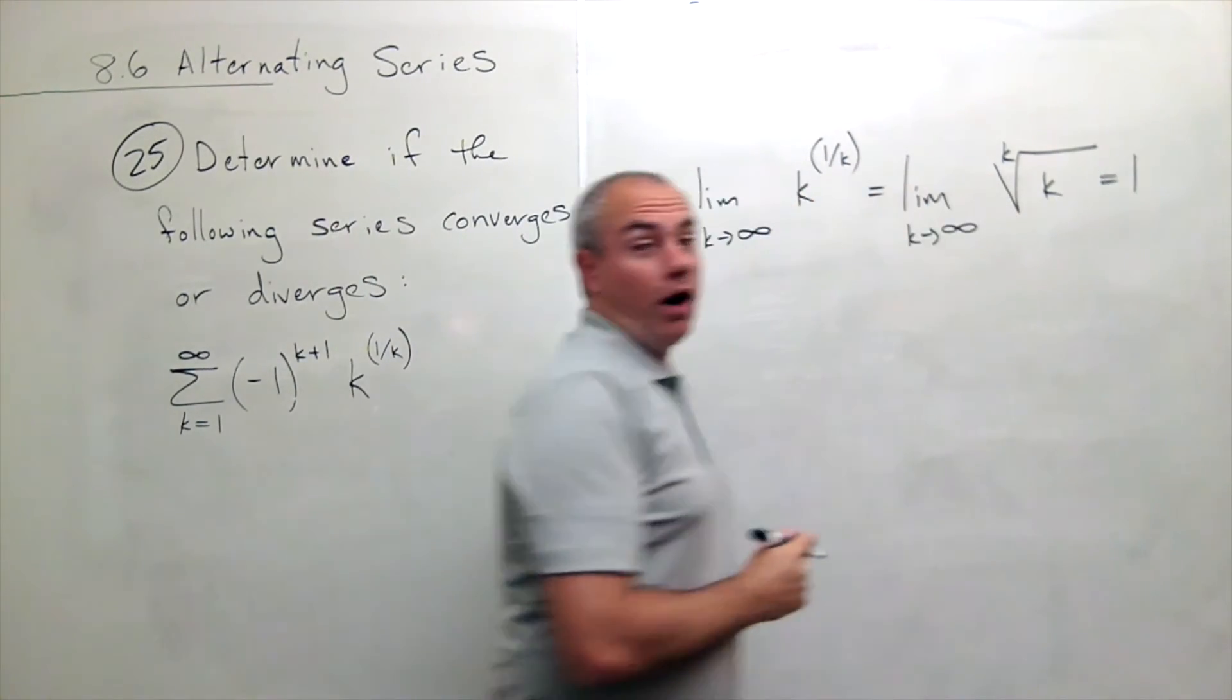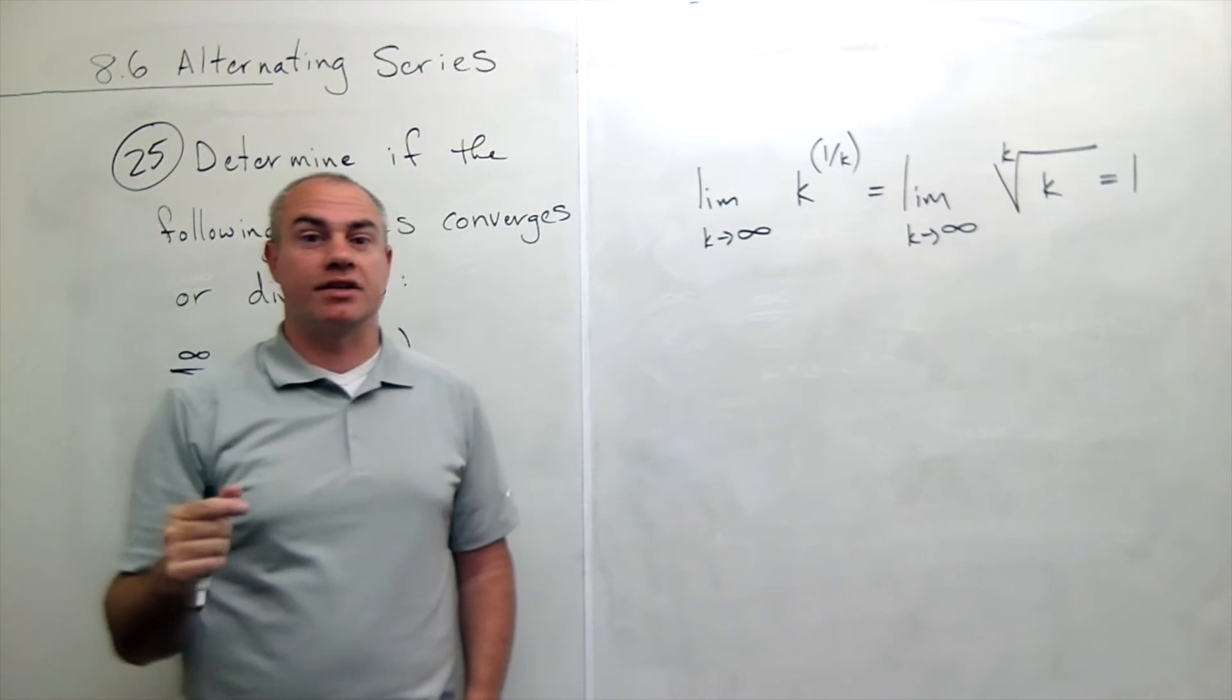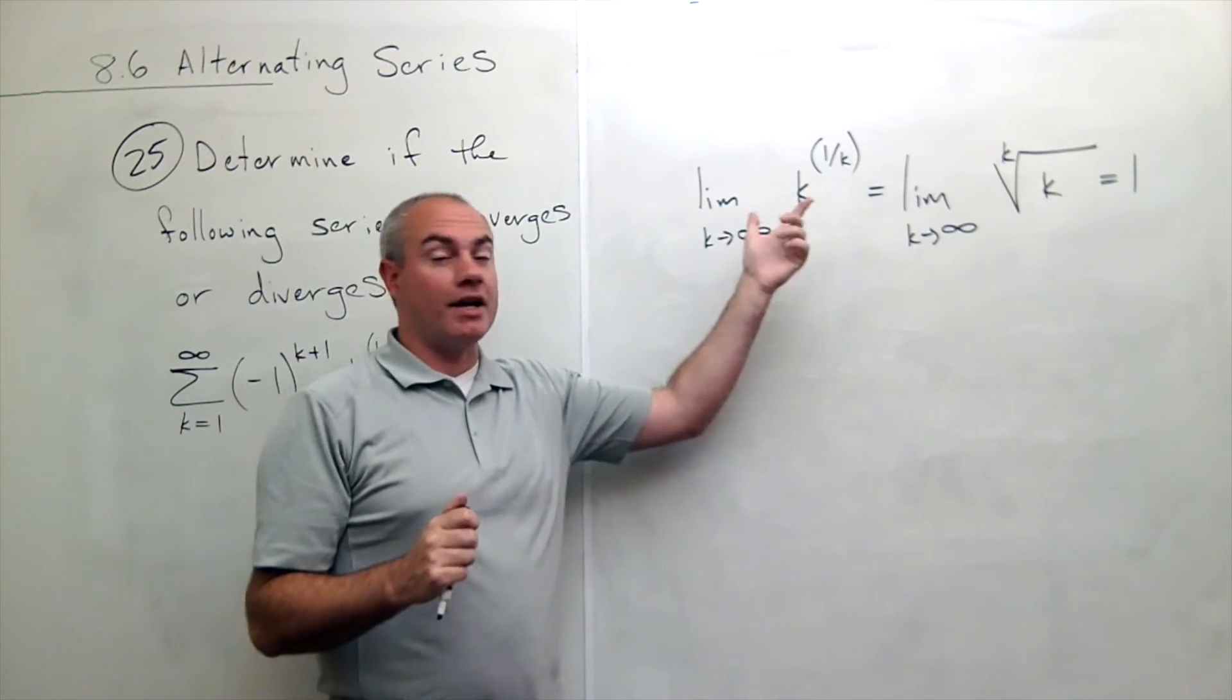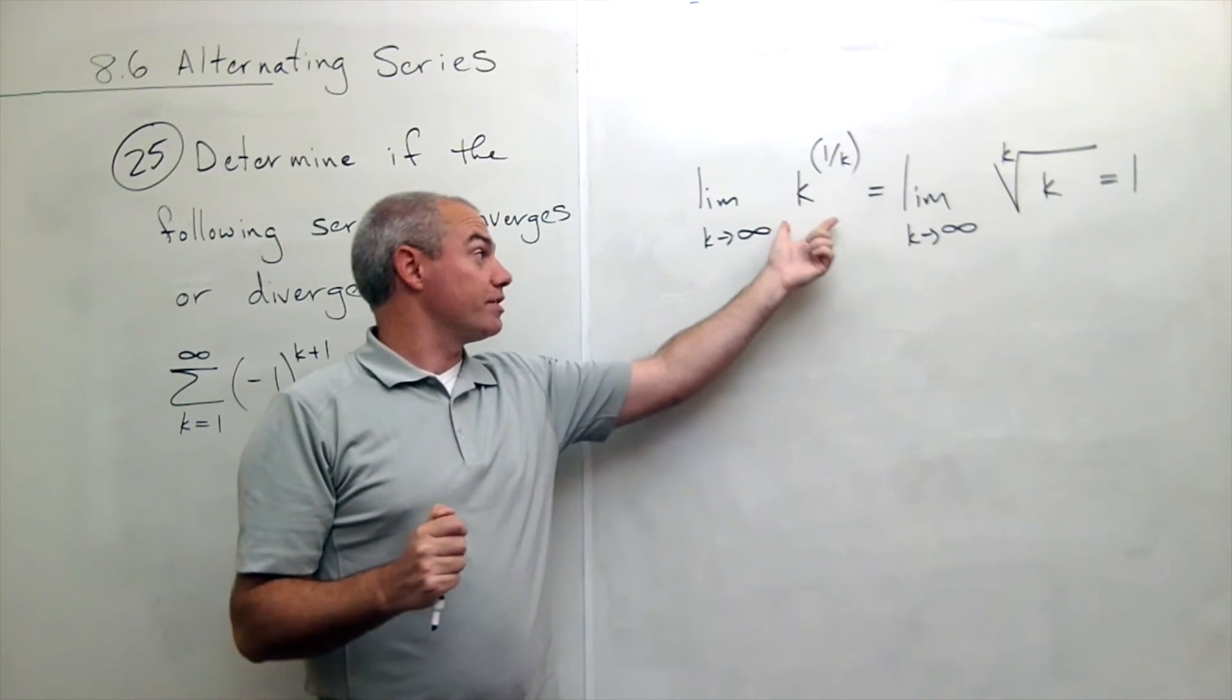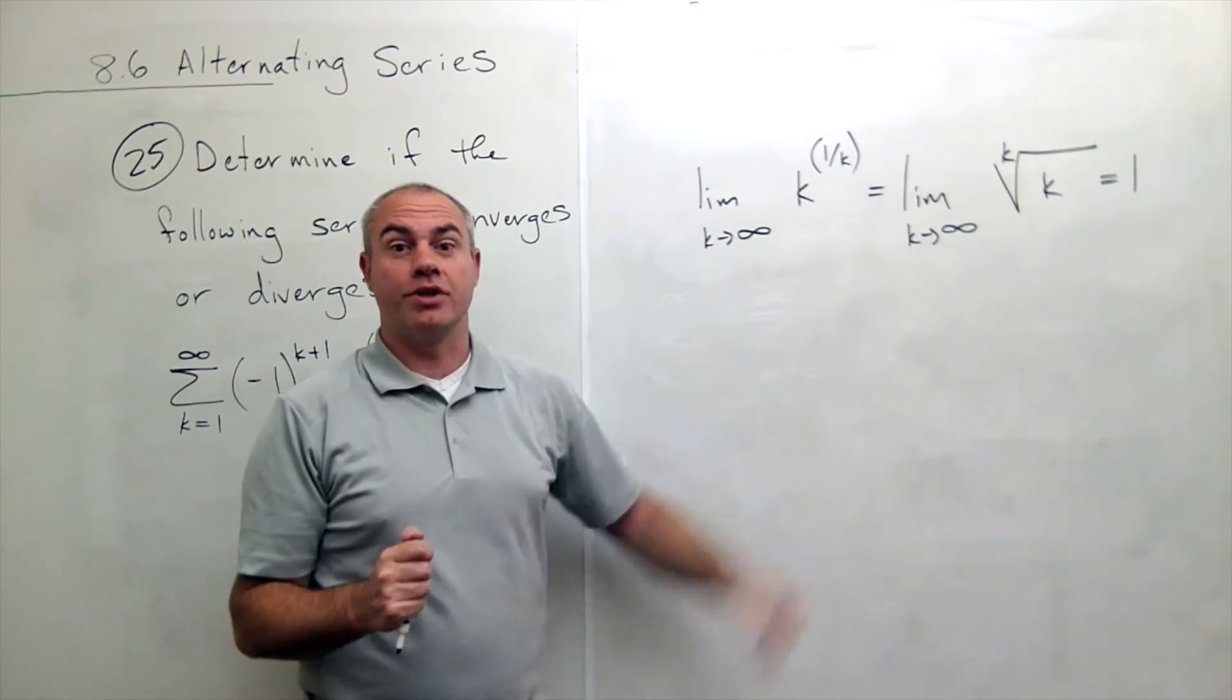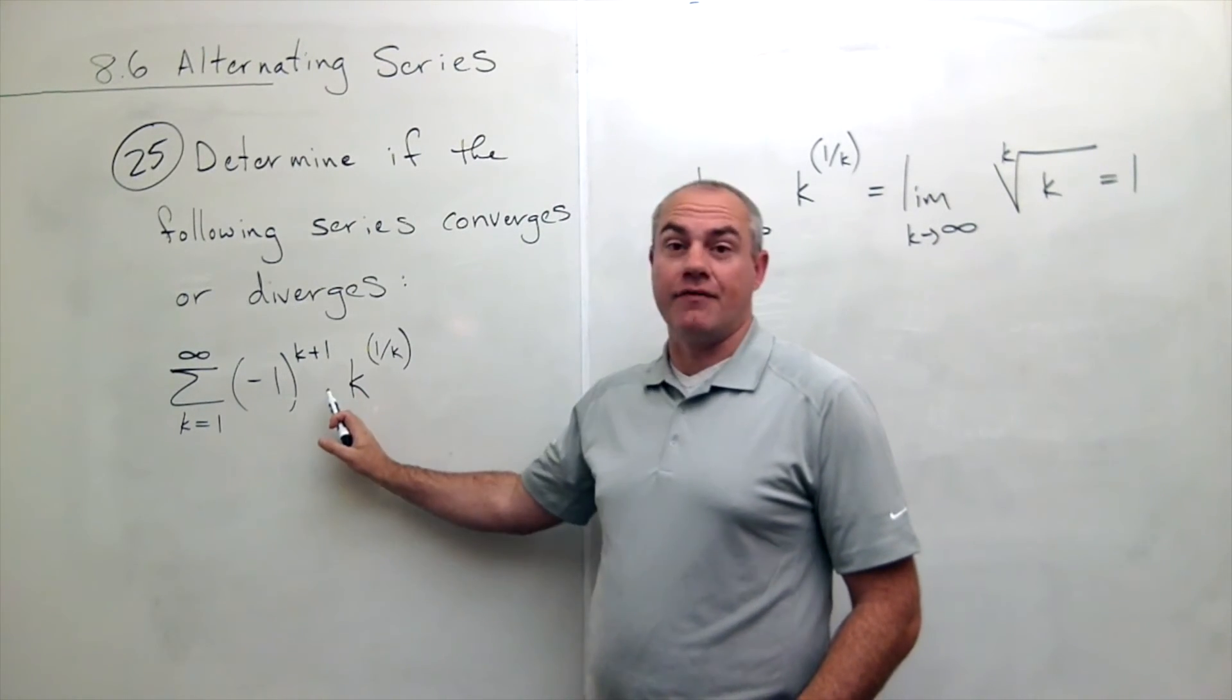Now 1 is not 0. The only way that an alternating series can converge is if the limit of the non-negative sequence goes to 0. This one goes to 1, which tells me that the original series diverges.